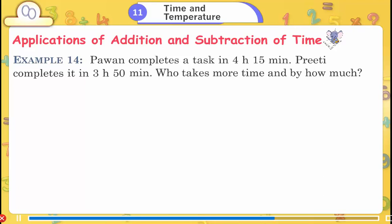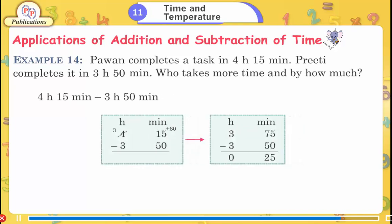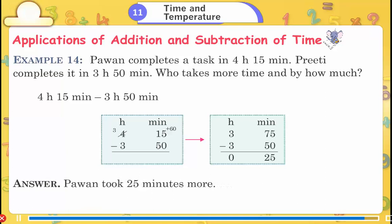Example 14: Pavan completes a task in 4 hours 15 minutes. Preeti completes it in 3 hours 50 minutes. Who takes more time and by how much? 4h 15m − 3h 50m. Answer: Pavan took 25 minutes more.